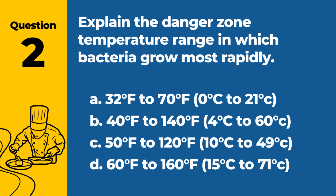Question 2. Explain the danger zone temperature range in which bacteria grow most rapidly. a. 32°F to 70°F, 0°C to 21°C. b. 40°F to 140°F, 4°C to 60°C. c. 50°F to 120°F, 10°C to 49°C. d. 60°F to 160°F, 15°C to 71°C.